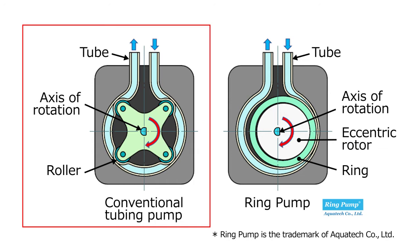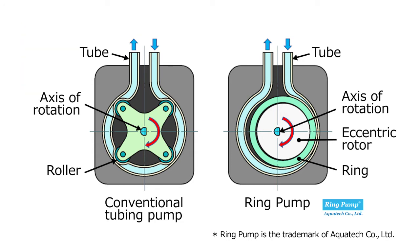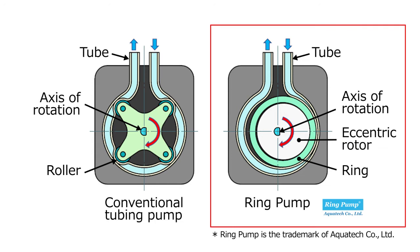Being tightly squeezed by the small rollers, the tube needs to be replaced in a short period of time. However, as the picture shows on the right, the ring pumps that we offer have a big ring, forcing the fluid to move through the tube in a gentle way. Lubricant is added between the ring and the tube to reduce friction. Based on these two improvements, the tube is allowed to be used for a longer time.